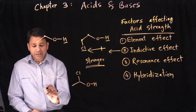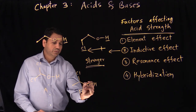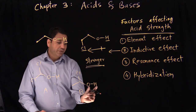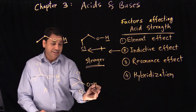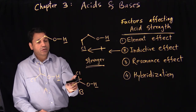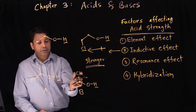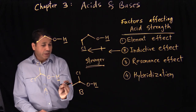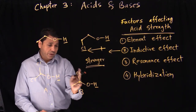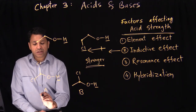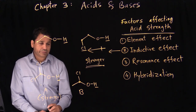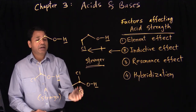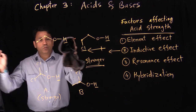Comparing example A with example B — again no element effect because the hydrogen acid is attached to the same element. The difference is one has two chlorines and the other has one chlorine on the carbon. Two chlorines will have a higher inductive effect — higher pulling power — compared to one chlorine, so that makes the two-chlorine molecule a stronger acid.